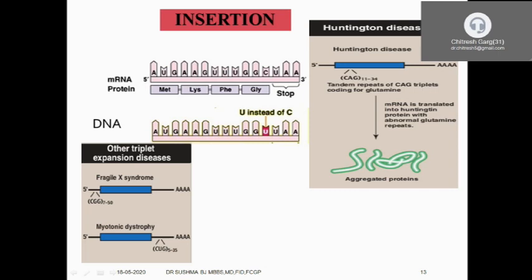An example of insertion is Huntington's disease, which illustrates tandem repeats or trinucleotide expansion disease. CAG repeats are present in Huntington's disease — up to 300 CAG repeats can be present in an affected patient. The clinical manifestation depends upon the number of CAG repeats. More and more CAG repeats result in an abnormal protein — a polyglutaminated protein. Fragile X syndrome is another example, with CGG repeat expansions.